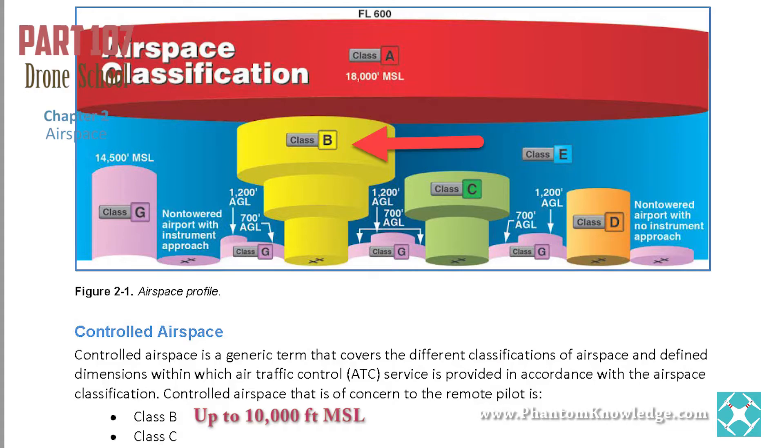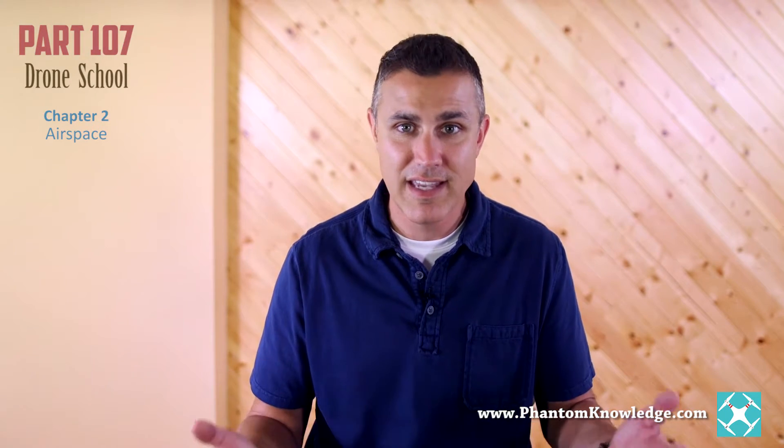Look at the yellow upside-down wedding cake in the image, and you'll see that Class B is narrowest at the center, and then the next tier up gets a bit wider, and then the next even wider yet. Manned aircraft pilots in Class B airspace are operating under what's called Instrument Flight Rules, or IFR, which means they may not even be looking out their window, or if the weather is bad, they may not see anything outside the cockpit window anyway.